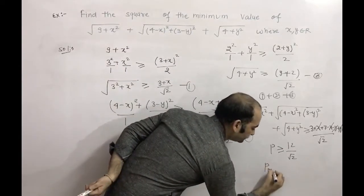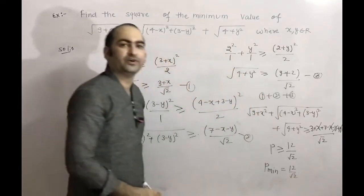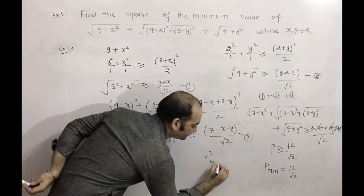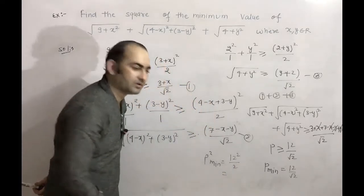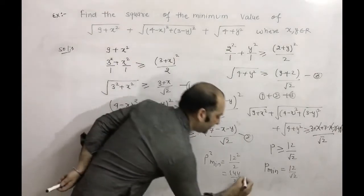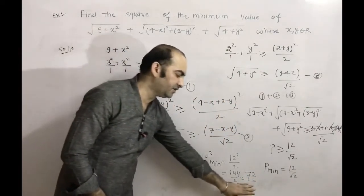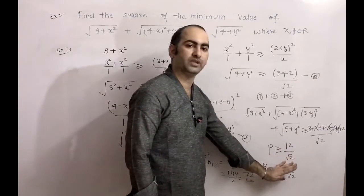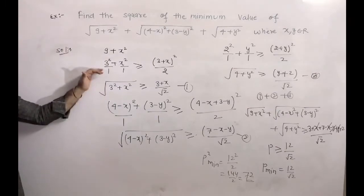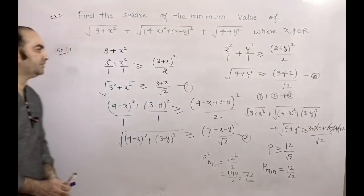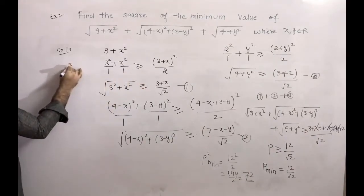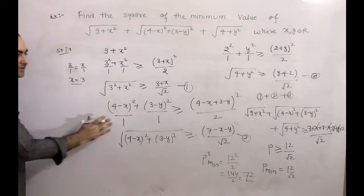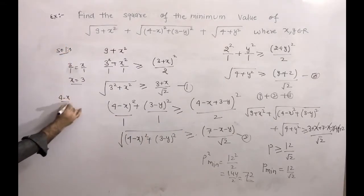The minimum value of P is 12/√2. We need the square of the minimum value, so P²_min = (12)²/2 = 144/2 = 72. Now we check whether this minimum is achievable. For equality in T2's inequality, we need 3/1 = x/1, so x = 3.